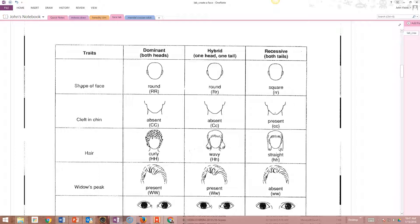For instance, for the trait shape of face, big R, which is round, is dominant over little r, which is square.